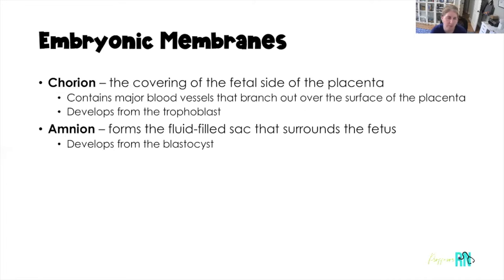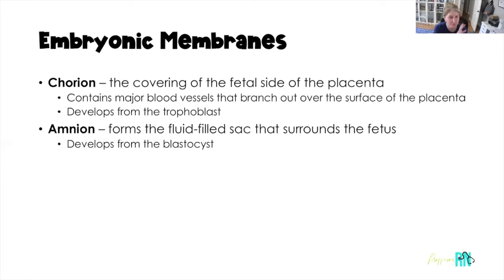The embryonic membranes are the chorion and the amnion. The chorion is the sac that covers the fetal side of the placenta — this is where all the major blood vessels are, branching out over the surface of the placenta. The chorion develops from the trophoblast. The amnion forms the fluid-filled sac that surrounds the baby and ultimately holds amniotic fluid. The amnion develops from the blastocyst.